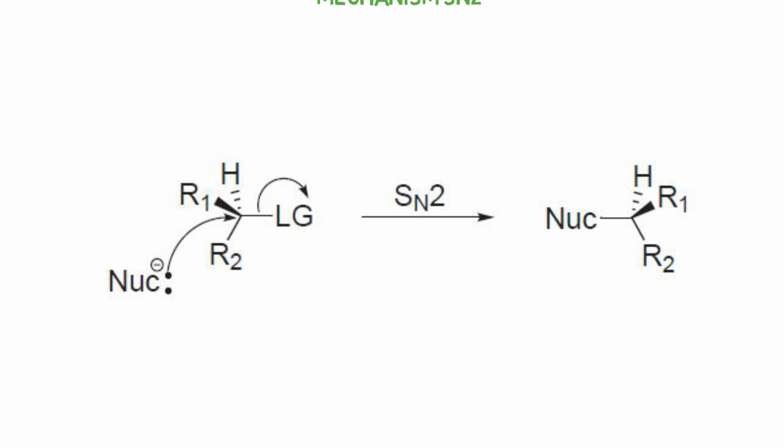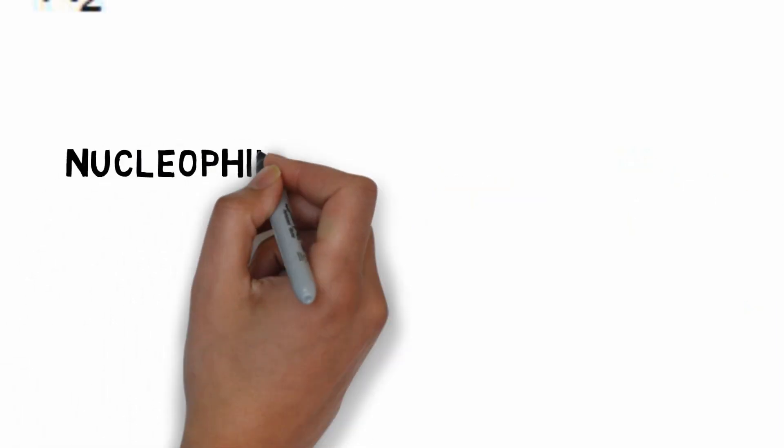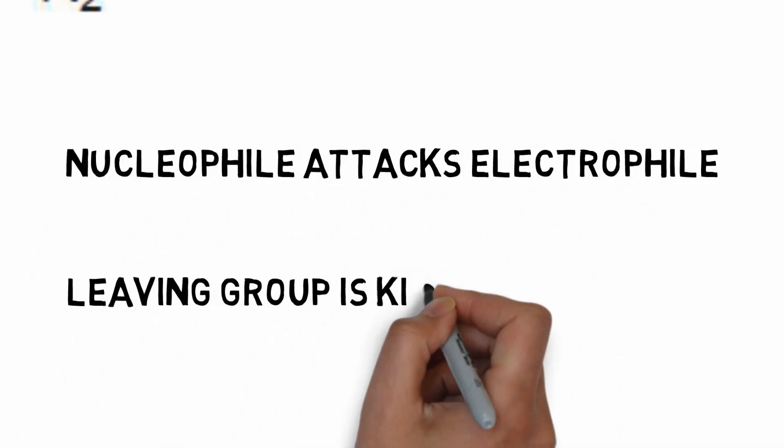Look at the reaction again. Two arrows are drawn, one from the lone pair of the nucleophile, and another from the bond between the carbon and the leaving group to form a lone pair on the leaving group. And if you're interested in stereochemistry here, SN2 undergoes inversion of configuration. That means the shape of the stereocenter of the compound gets inverted.